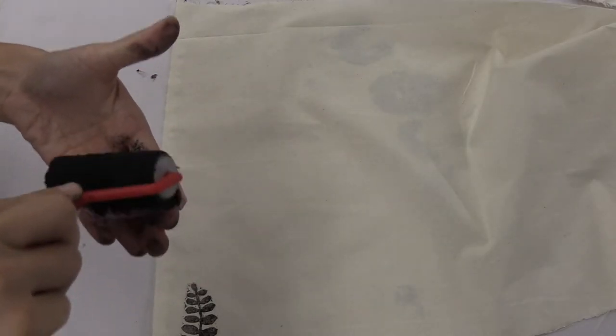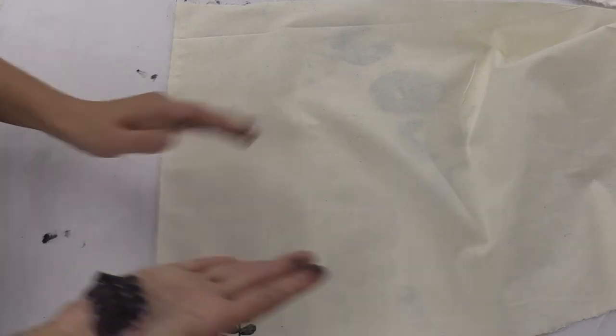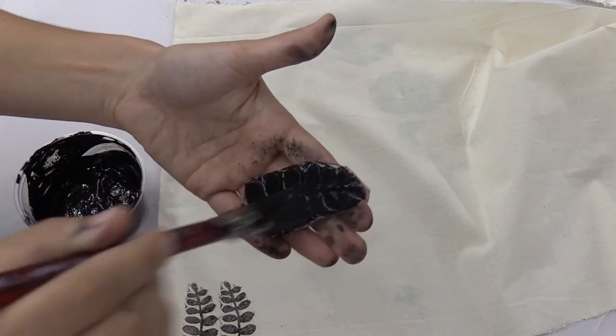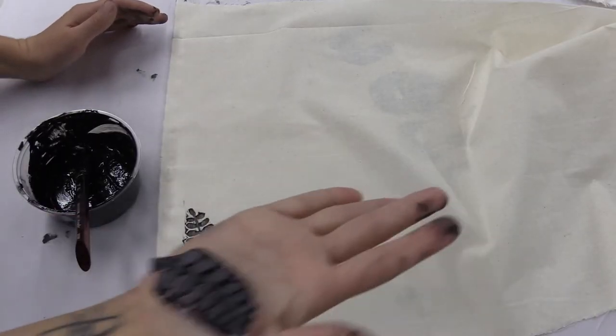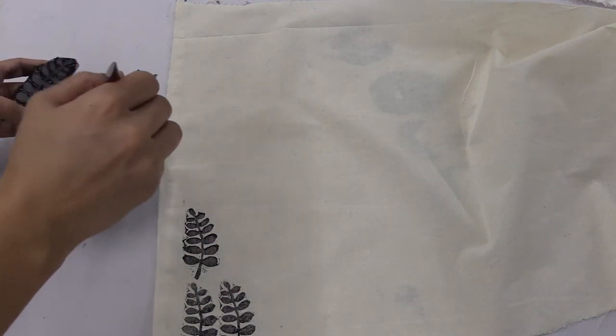Simply put it face down on the fabric and apply pressure with your hand. You can do this multiple times to create patterns. Next we'll try using the paintbrush. Again, make sure you just apply a thin amount of paint so that it doesn't oversaturate the image.